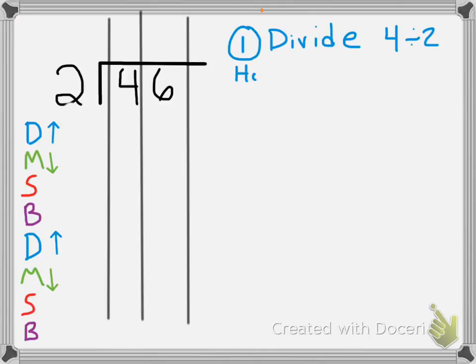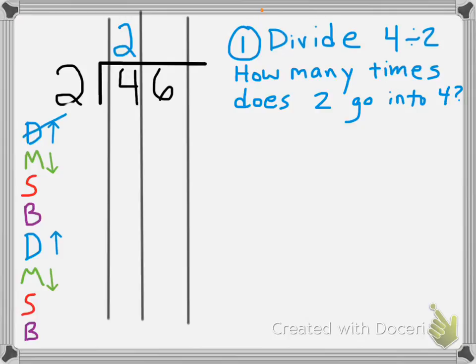Step number one, divide. And we are looking at 4 divided by 2. And the way I say it is, how many times does 2 go into 4? 2 goes into 4, 2 times, and that was our divide step. So I crossed out my first D in my DMSB's.